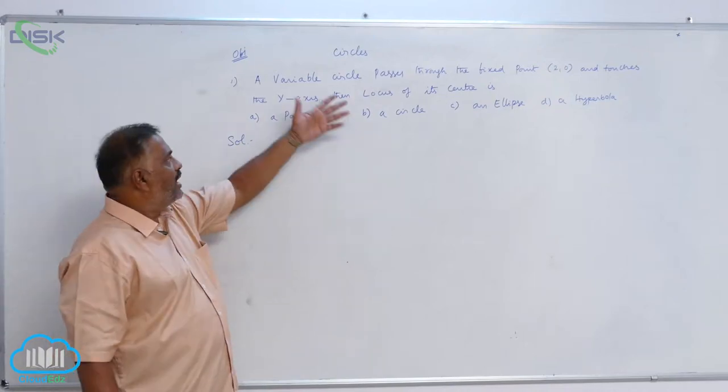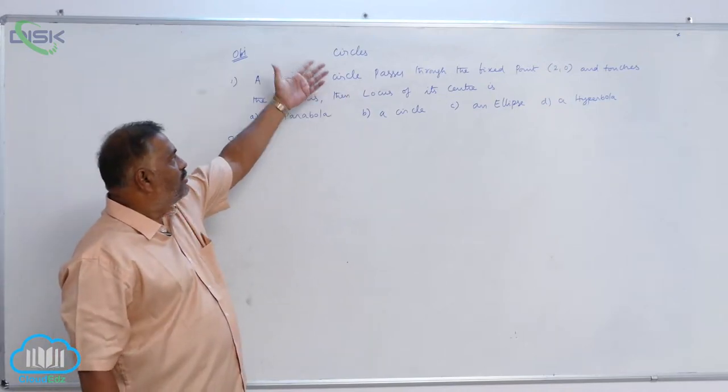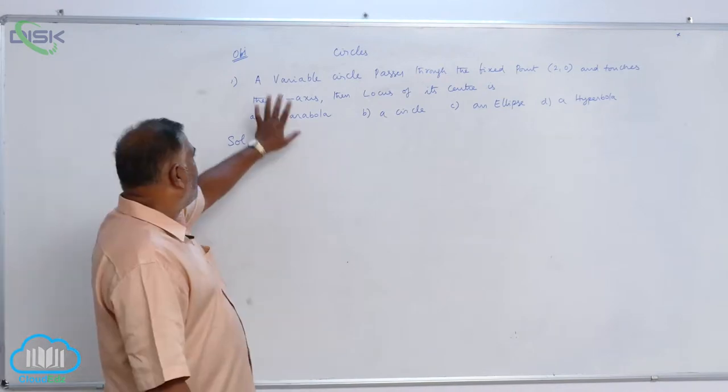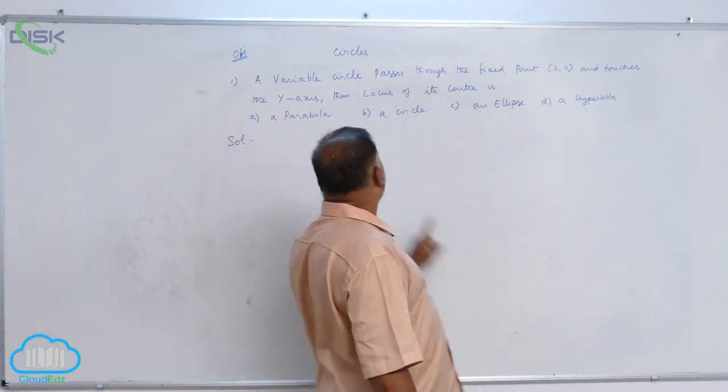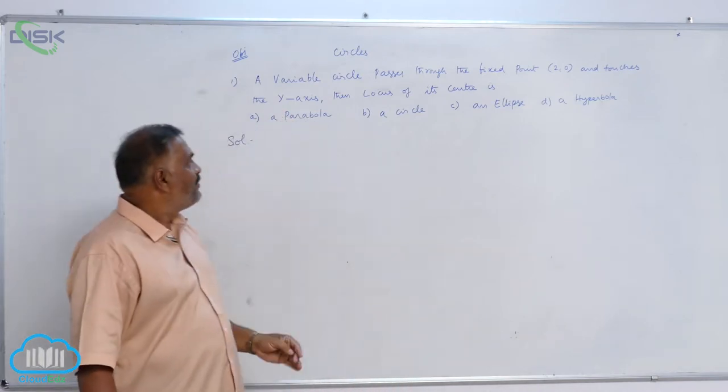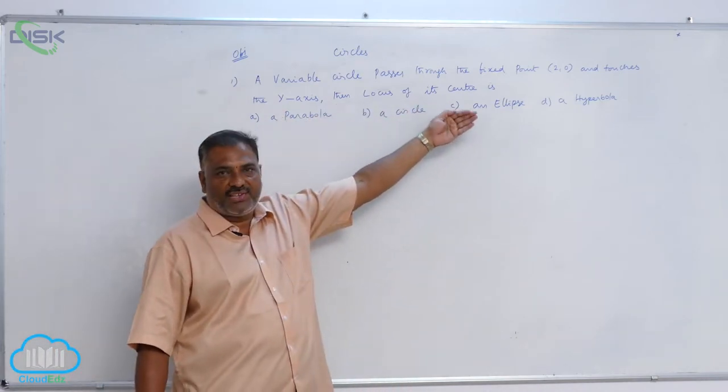We will discuss a problem in objective for the chapter circles. A variable circle passes through the fixed point (2, 0) and touches the y-axis. Then locus of its center is.